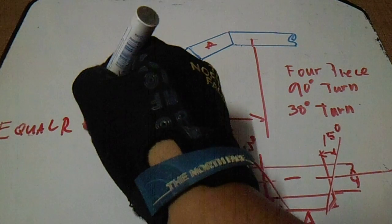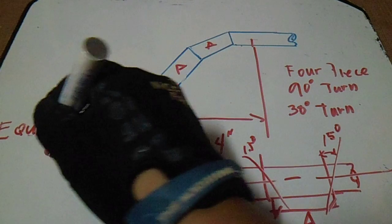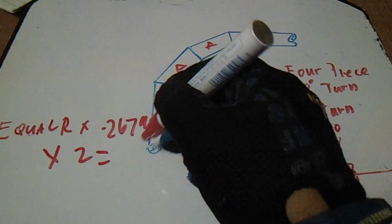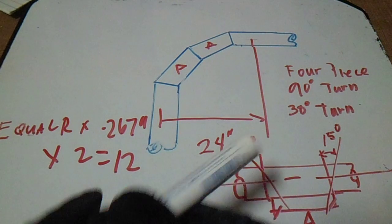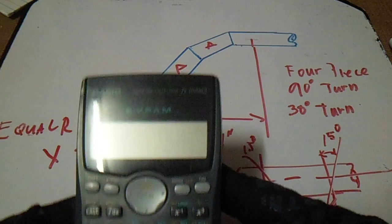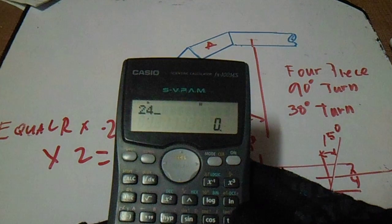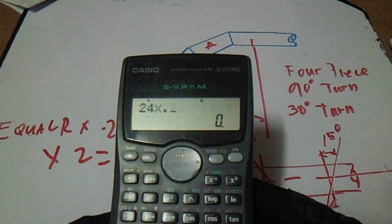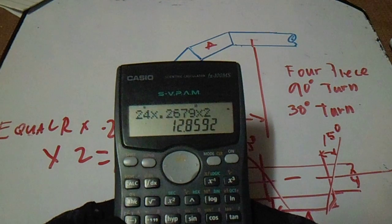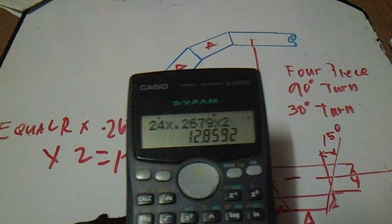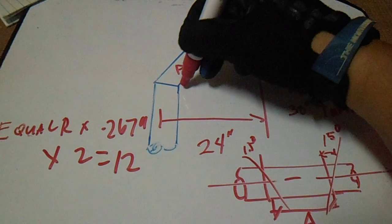The formula is: Dimension A = radius × 0.2679 × 2. We have a radius of 24, so 24 × 0.2679 × 2 = 12.85 inches. This is the answer — this is our dimension A.